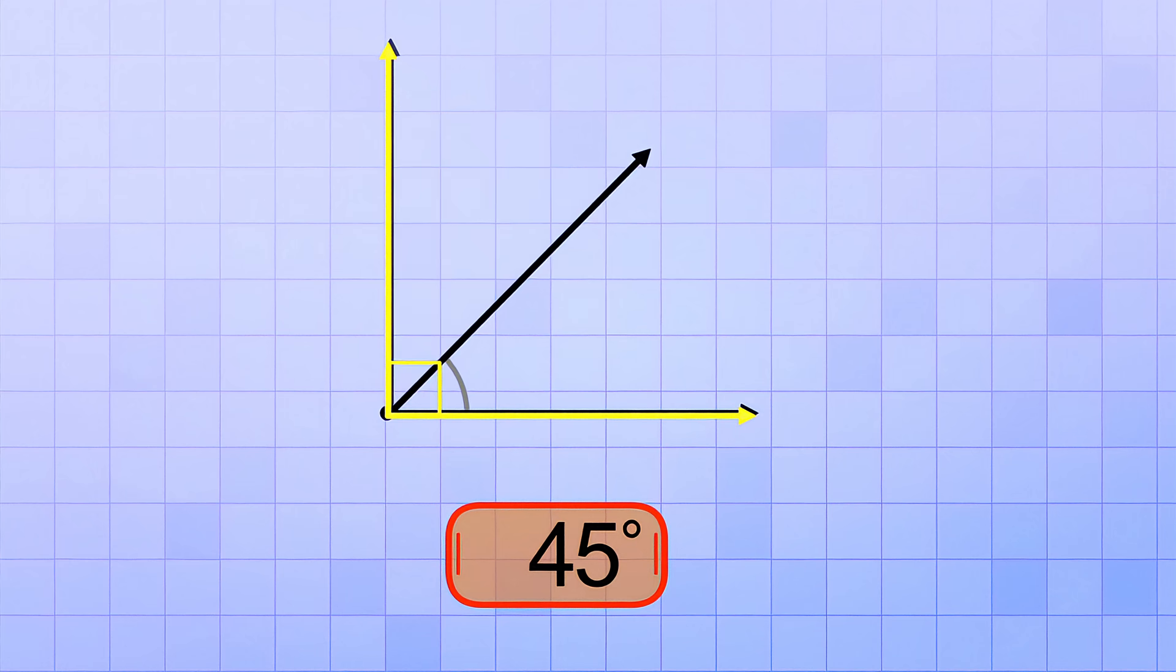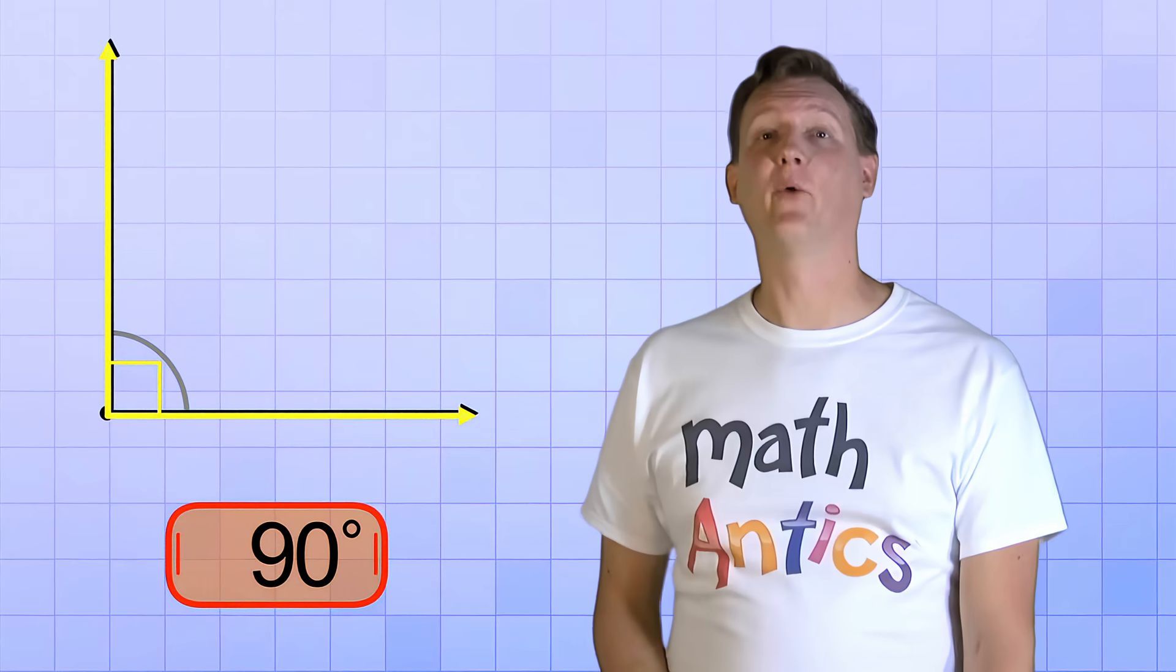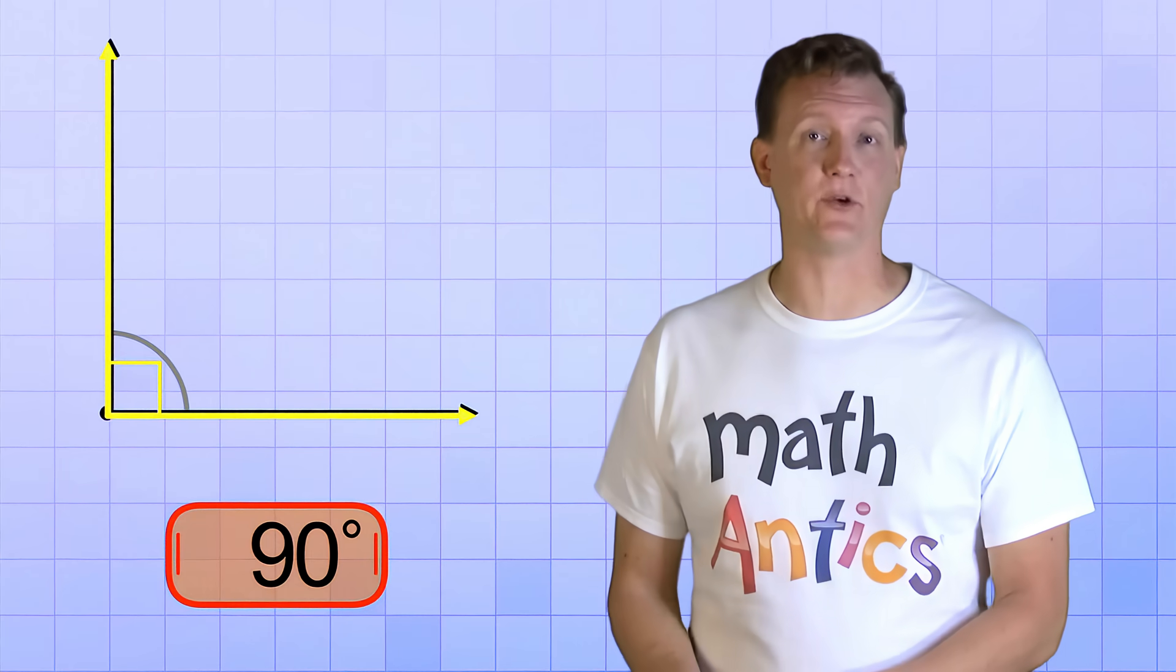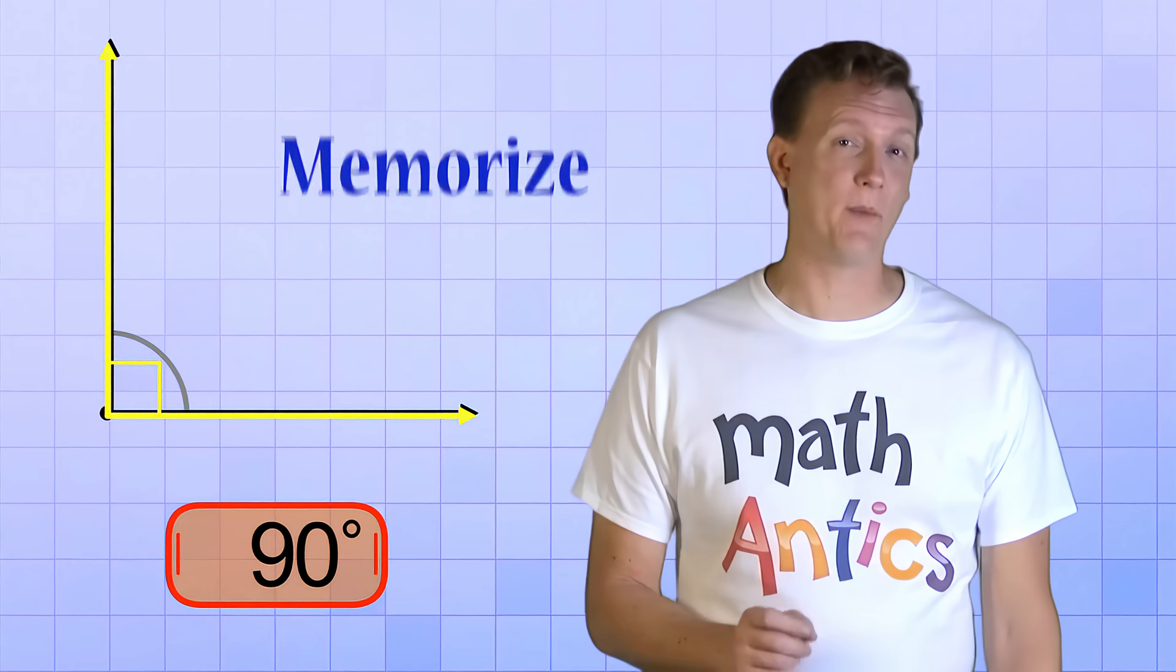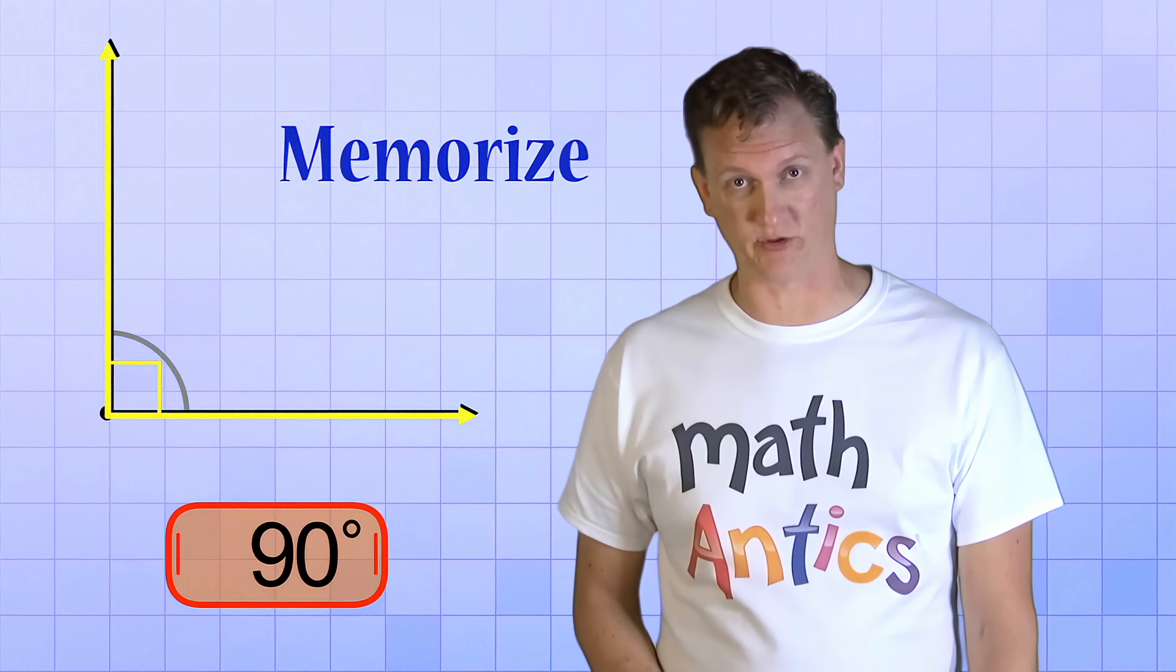So, if 45 degrees is half of a right angle, can you guess how many degrees a right angle is? Let's keep on rotating to see if you're right. 50, 60, 70, 80, and 90. Yup, a right angle is exactly 90 degrees. And that is super important to memorize because right angles are used all the time in geometry.